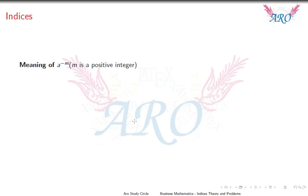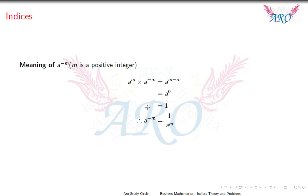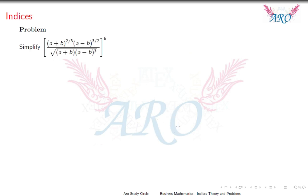Meaning of A power minus M, where M is a positive integer. By the first law, A power M · A power minus M equals A power M plus (minus M) equals A power 0, which equals 1. Therefore A power minus M equals 1 divided by A power M.